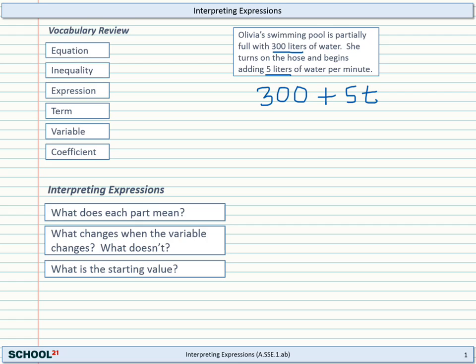Now, let's ask some of these questions about this expression. What does each part mean? Well, 300 is the amount of water that the swimming pool started with. The 5 is the amount of water that's added per minute. And what's T? Right, it's the number of minutes. So now if you understand each part of this expression, you can really understand how it begins to work together.